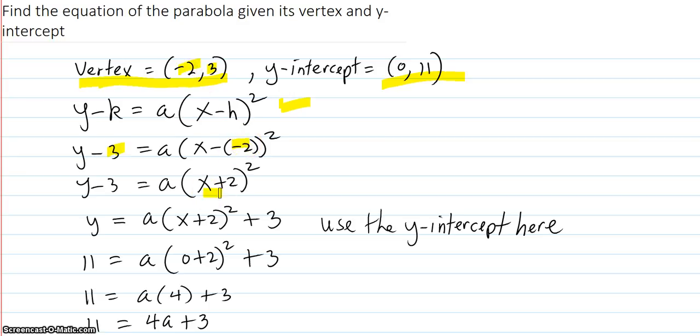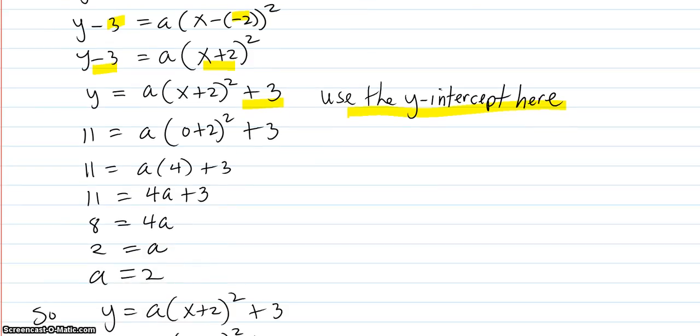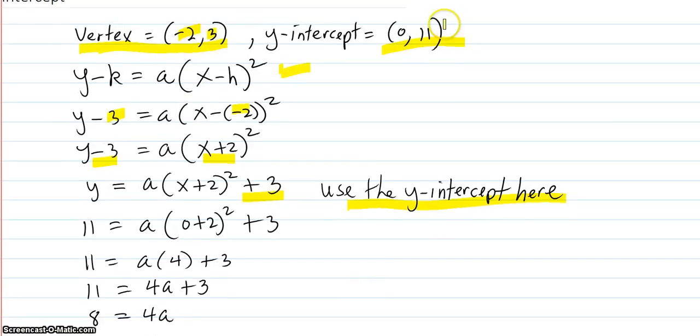And then we simplify this down, x plus 2. We add 3 to both sides. It knocks it off the left, puts it over here. Now we use the y-intercept. The y-intercept is (0, 11). So when x is 0, the y better turn out to be 11. That means we can now solve for the a.